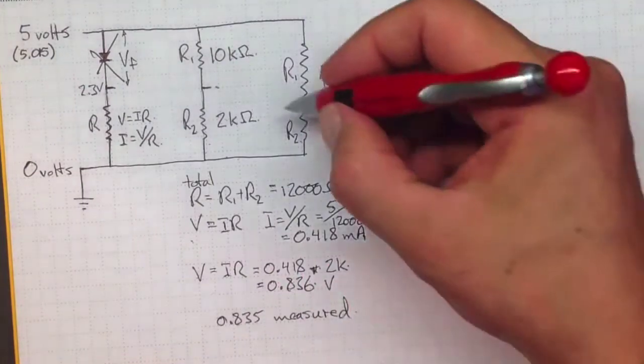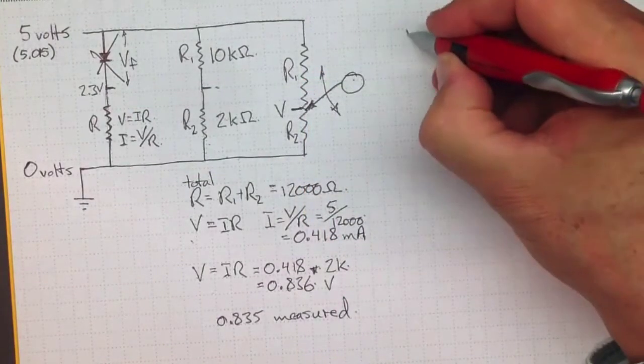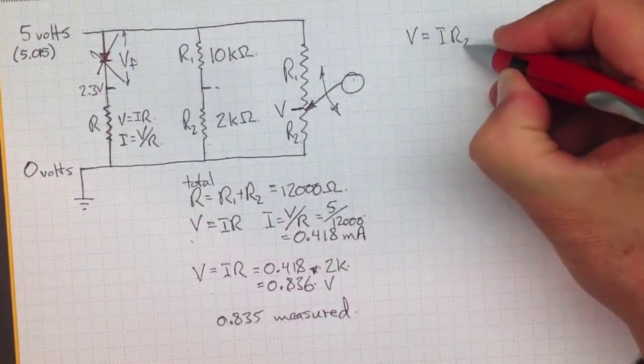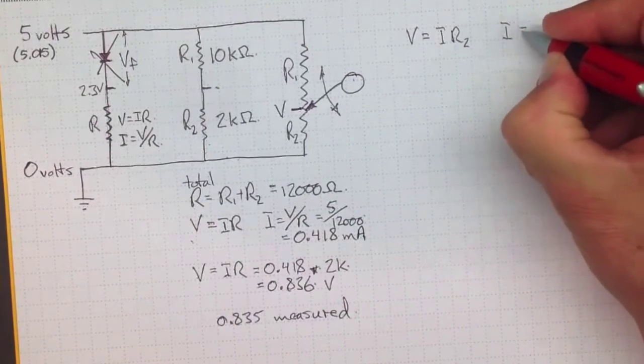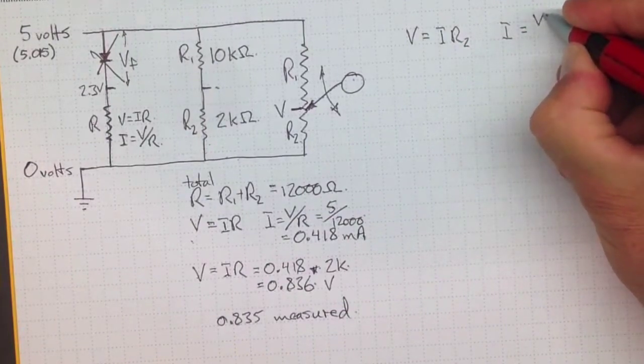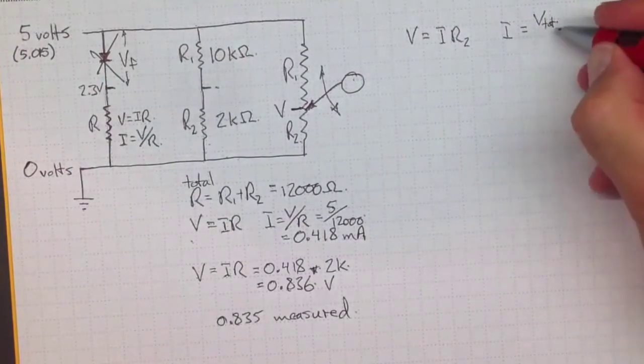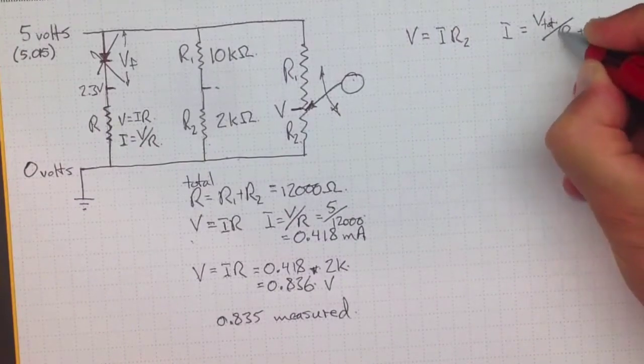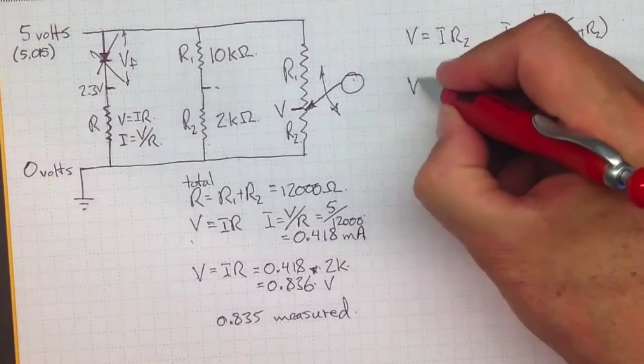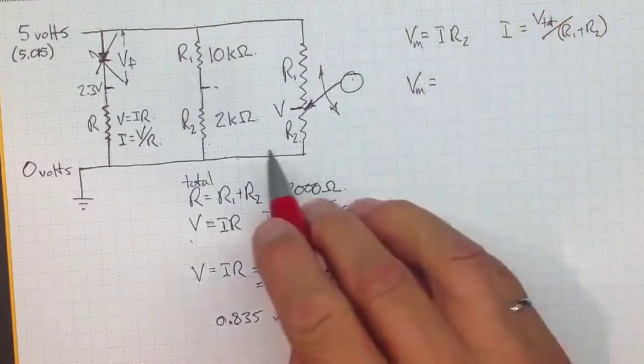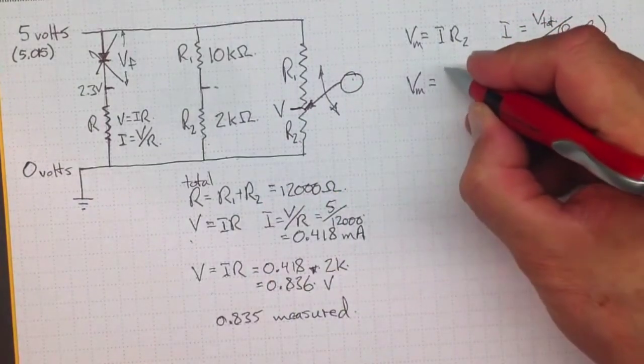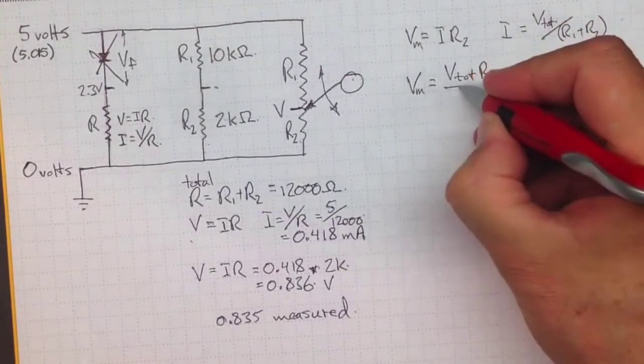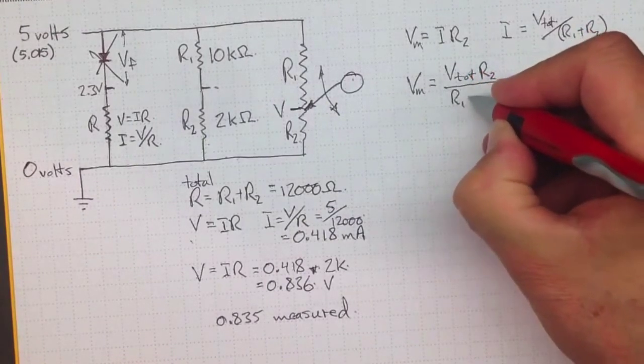So that voltage right there will be equal to I times R2 and I is equal to the total voltage, the 5 volts, divided by R1 plus R2. So the measured voltage should be the total voltage times R2 divided by R1 plus R2.